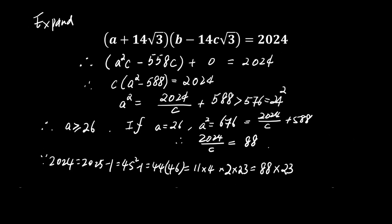This gives c equals 2024 divided by 88, which equals 23. Since c equals 23 is an integer, we now check b, which is a times c, or 26 times 23, which equals 598.